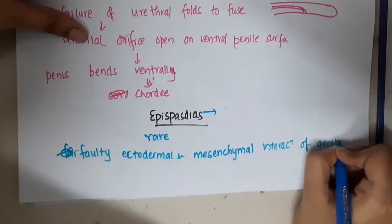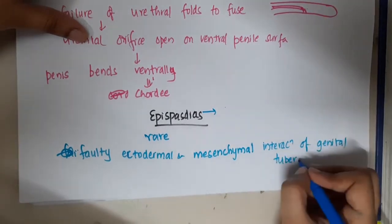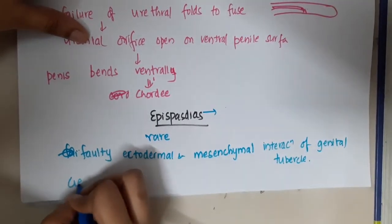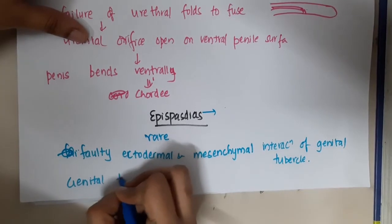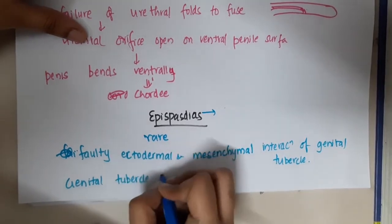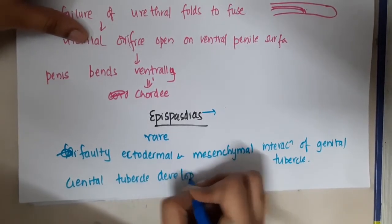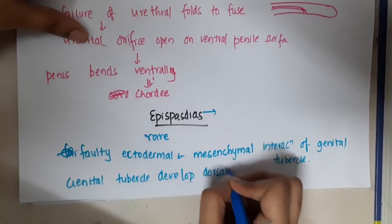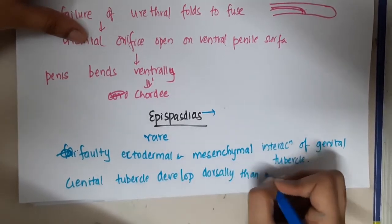Here the genital tubercle itself develops in the wrong position. The genital tubercle will develop more dorsally than normal.